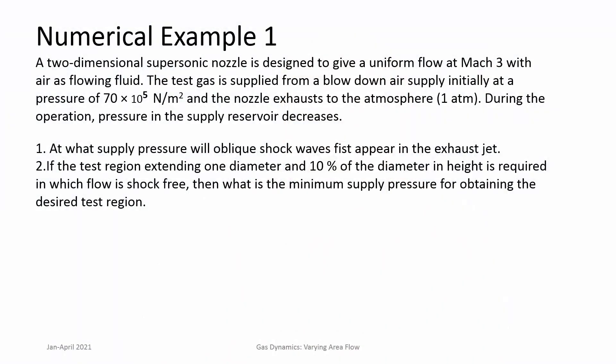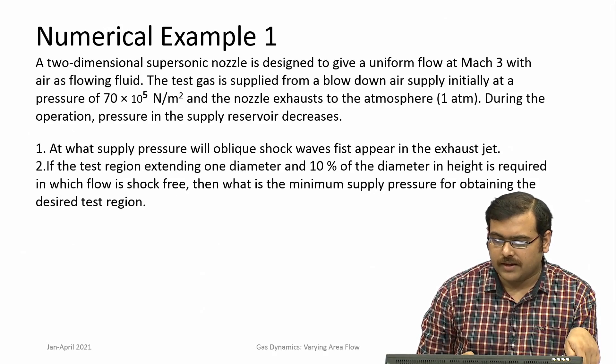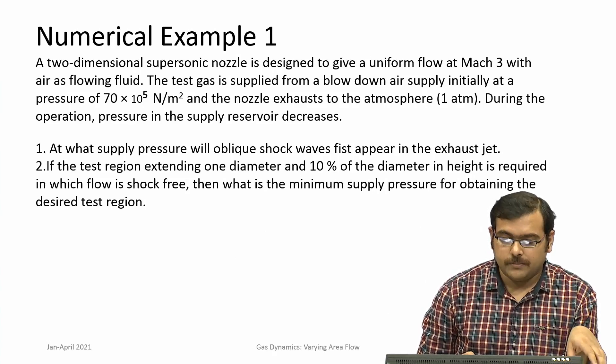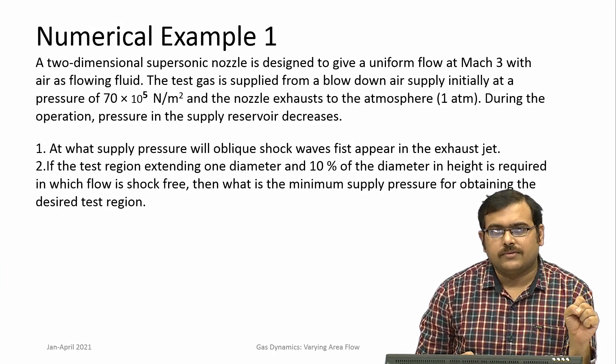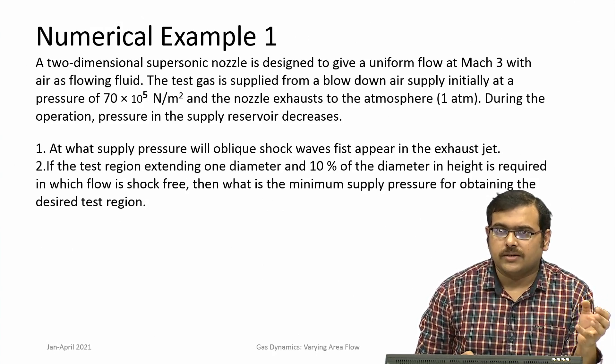The first problem: a two-dimensional supersonic nozzle is designed to give uniform flow at Mach 3. Air is the flowing fluid; the test gas is supplied from a blow-down air supply initially at a pressure of 70 × 10⁵ Newton per meter square. The nozzle exhausts to atmosphere and during operation the supply pressure decreases. We need to find at what supply pressure oblique shock waves first appear in the exhaust jet, and what is the minimum supply pressure for obtaining a desired shock-free test region. This is an applied problem normally used in wind tunnel applications.